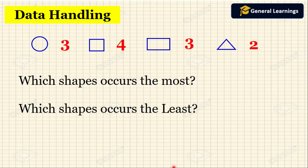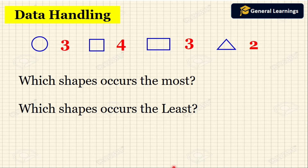So we know that in the above picture we counted the number of circles as three, number of squares as four, number of rectangles as three, and number of triangles as two.